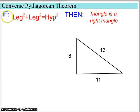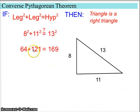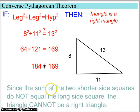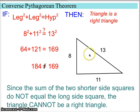Our two short sides are 8 and 11, so they go in the leg positions, and we assume 13 is the hypotenuse. We evaluate: 8 squared is 64, plus 11 squared is 121, and 13 squared is 169. When we add 64 and 121 together, we get 184. That is not equal to 169, so this is not a right triangle. Since the sum of the two shorter side squares does not equal the long side squared, this cannot be a right triangle — and that's what the converse of the Pythagorean Theorem states.